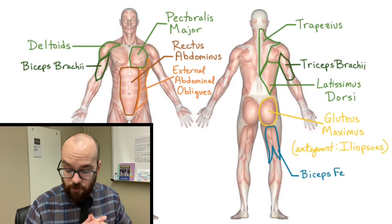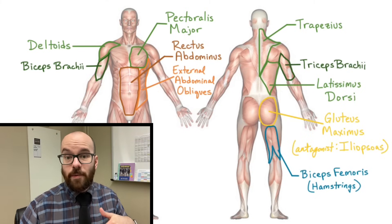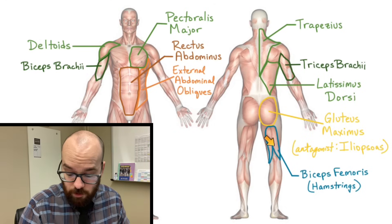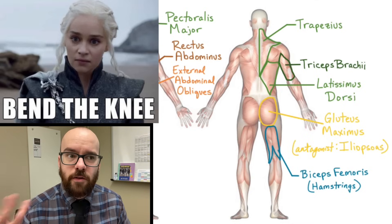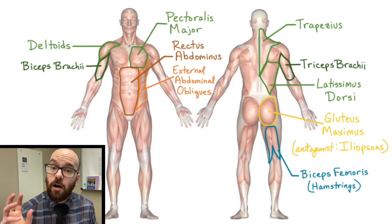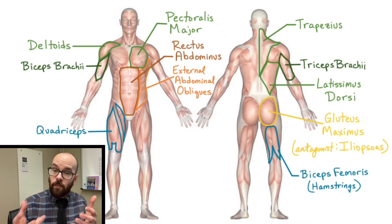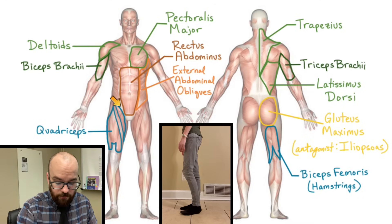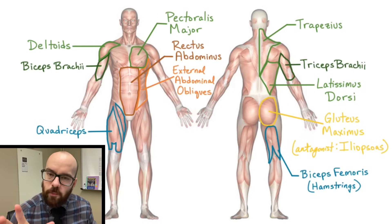For knee movement: the biceps femoris, also called the hamstrings, are the back leg muscles whose job is to flex the knee joint. They originate in the pelvis and femur, and their insertion is the tibia and fibula — pulling those to bend the knee. Their antagonist is the quadriceps: four muscles — rectus femoris, vastus lateralis, vastus medialis, and the deeper vastus intermedius. The quads extend or straighten the knee joint. Their origin includes the pelvis and femur, and their insertion is the patella and tibia.